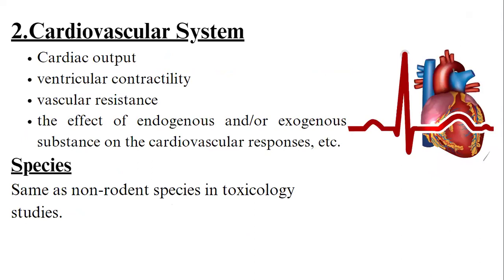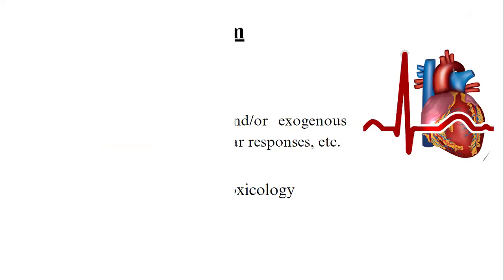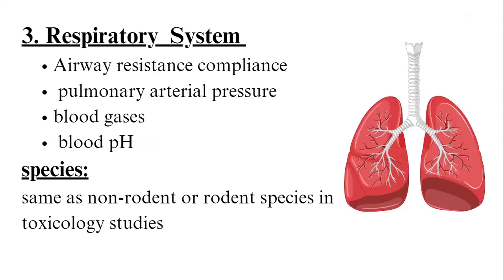For the cardiovascular system follow-up study, parameters include cardiac output, ventricular contractility, vascular resistance, and the effect of endogenous or exogenous substances on cardiovascular response. The same non-rodent species used in toxicology studies are typically used. For the respiratory system, parameters include airway resistance, compliance, pulmonary artery pressure, blood gas, and blood pH, using the same non-rodent or rodent species as in toxicology studies.